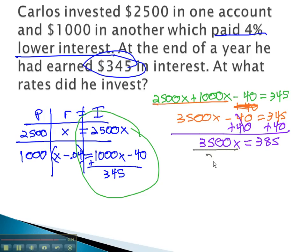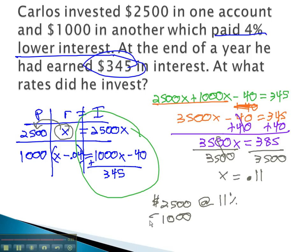Dividing both sides by 3,500, we find out that x is equal to .11. x is that $2,500. This means $2,500 was invested at .11, or as a percent, 11%. The other account, the $1,000, was invested in a rate that was 4% less. 4% less than 11 is 7%.